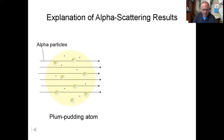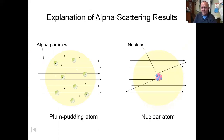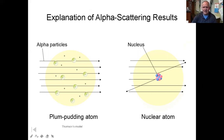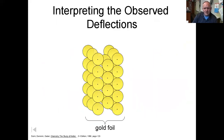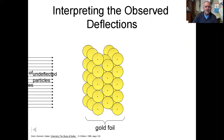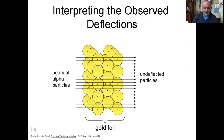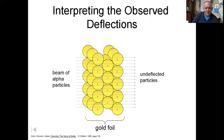Under the plum pudding model you'd expect alpha particles to go straight through. But under the nuclear atom model, the whole positive part is not spread out anymore — it's all contained in a tiny little nucleus. As the alpha particles come through, most of the time they go right through, but if one happens to hit that tiny, heavy, dense nucleus, you get a deflection. That's exactly what they observed in the simulation and the real experiment.